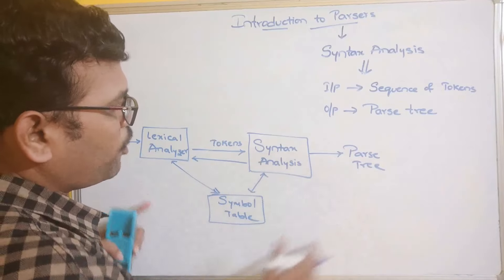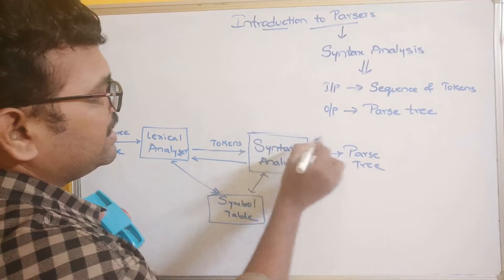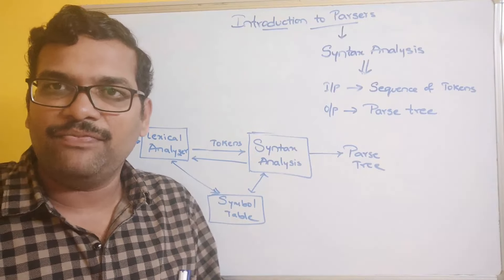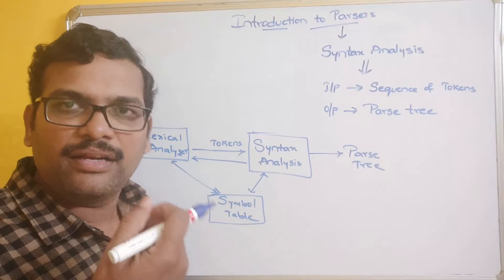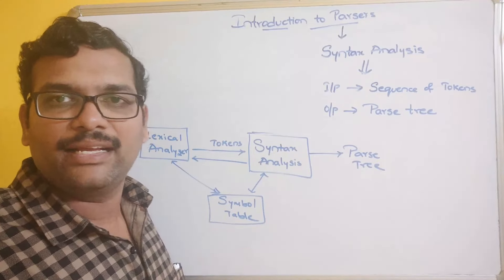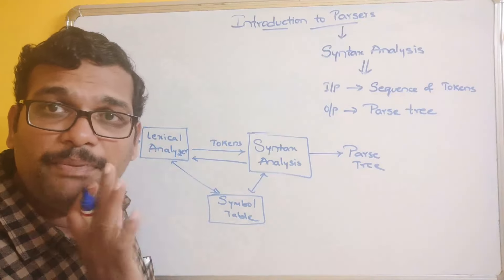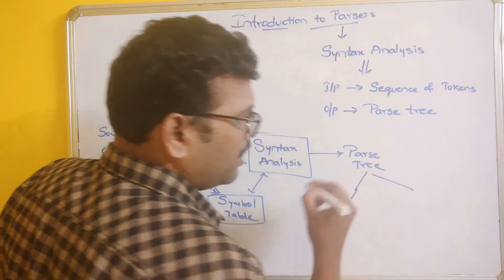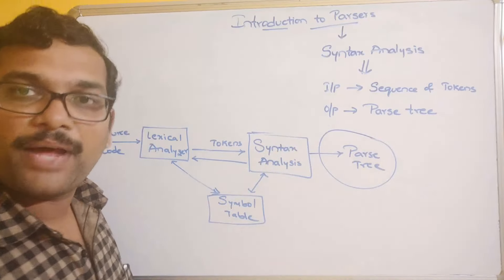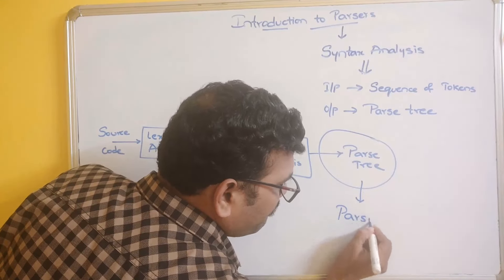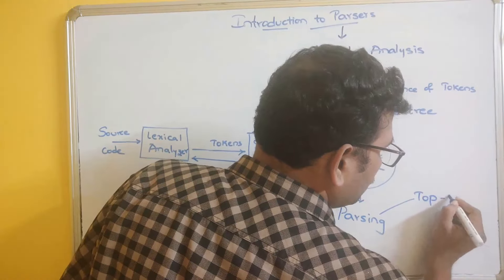This process — syntax analysis — is also known as a parser. It is the second phase of compiler design. It also checks the syntax, whether the keywords or identifiers are written in a syntactically correct way. If they are not, then errors will be raised. This parse tree can be generated in two ways, and the process of generating the parse tree is known as parsing.